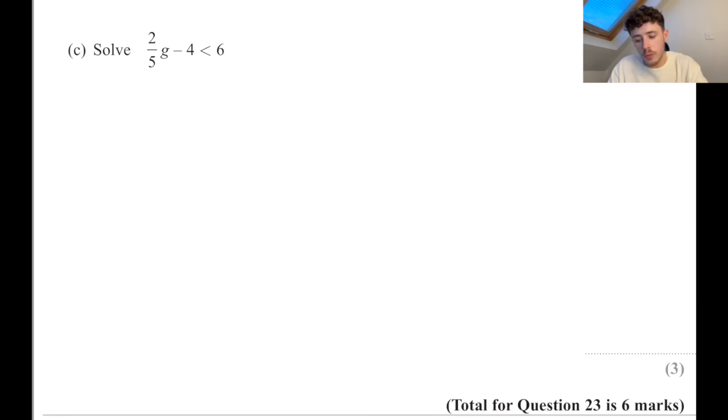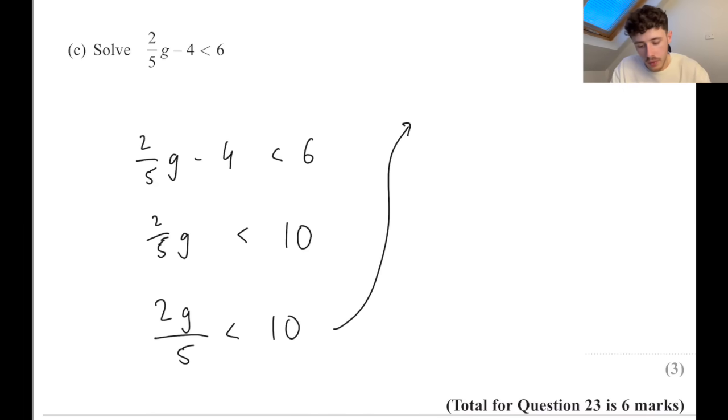Solve this. As always, don't be scared by this symbol, treat it exactly like you would an equals. So 2/5 of g minus 4 is less than 6. First of all, deal with everything that isn't touching the g - that's the minus 4. So we can add 4 to both sides, which gives us this. Another way of writing this fraction is 2g over 5. Then we can multiply by 5 to get 50, and divide by the 2 to get rid of that. So 25. g is less than 25.